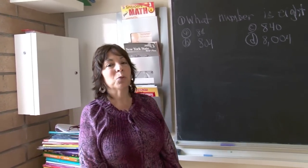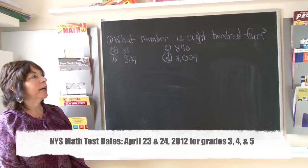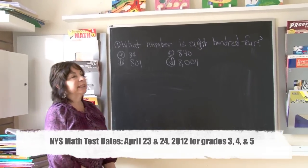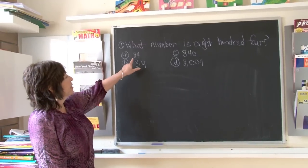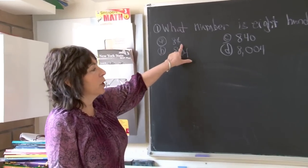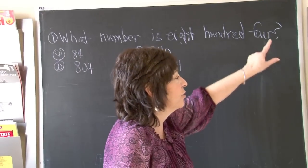So let's look at question number one now. Question number one says, what number is 804? Boys and girls, if we look at the first one, it's 84. This said 804. So 84 cannot be the answer because there is no hundreds column.